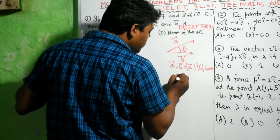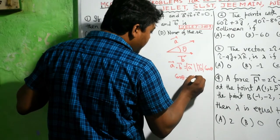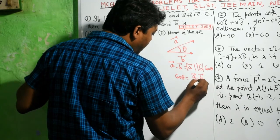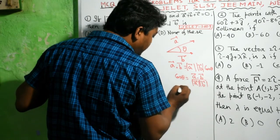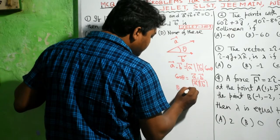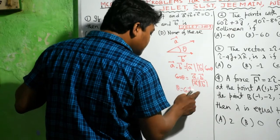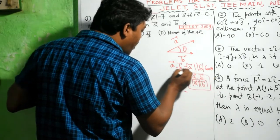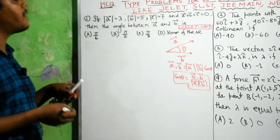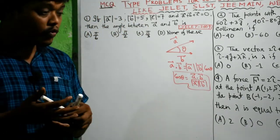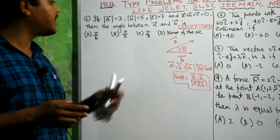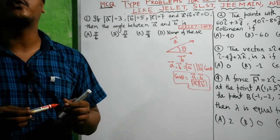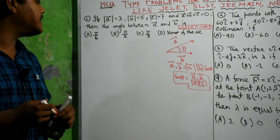So cosine theta equals A dot B divided by mod A times mod B, and theta equals the inverse cosine of this. From this relation you will get the value of theta. The expression for theta depends on how we calculate A dot B.